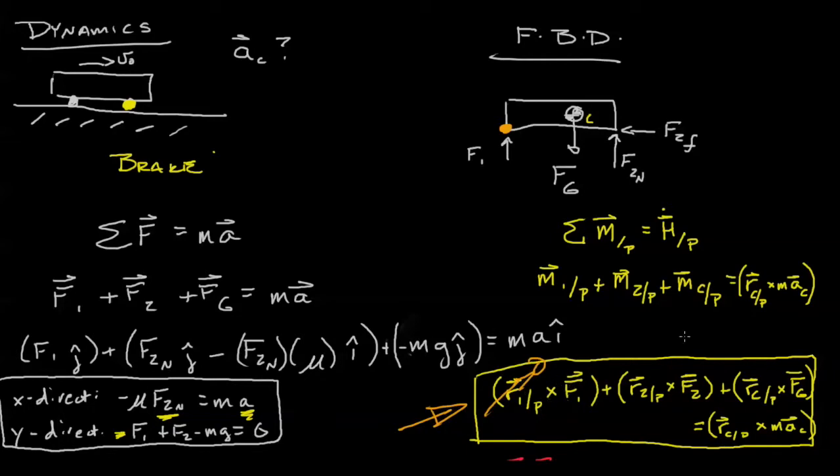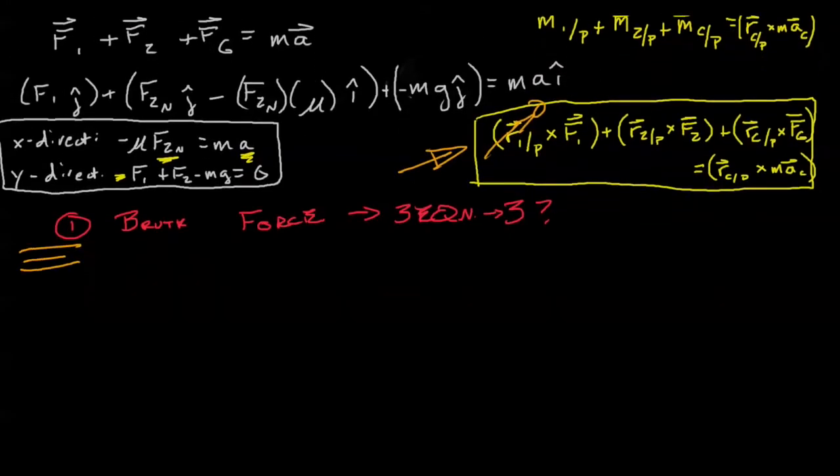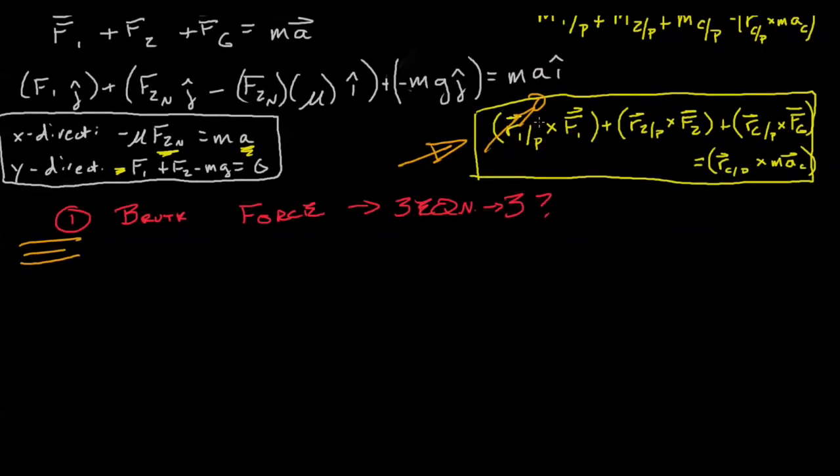So zero cross F, it doesn't matter what that is, it's going to be zero. Let's imagine that I choose point P in such a way that the position between one and P is zero. That's going to change this equation. That means this equation is now going to look like this.